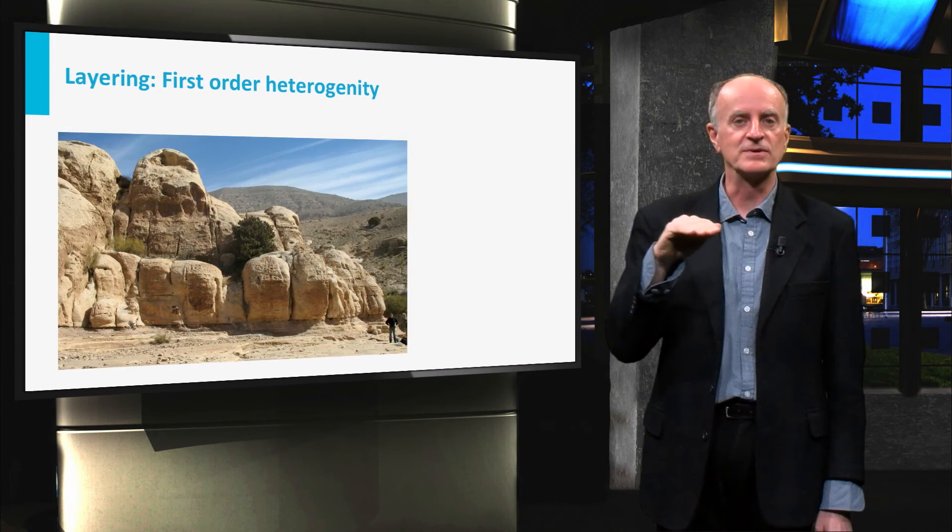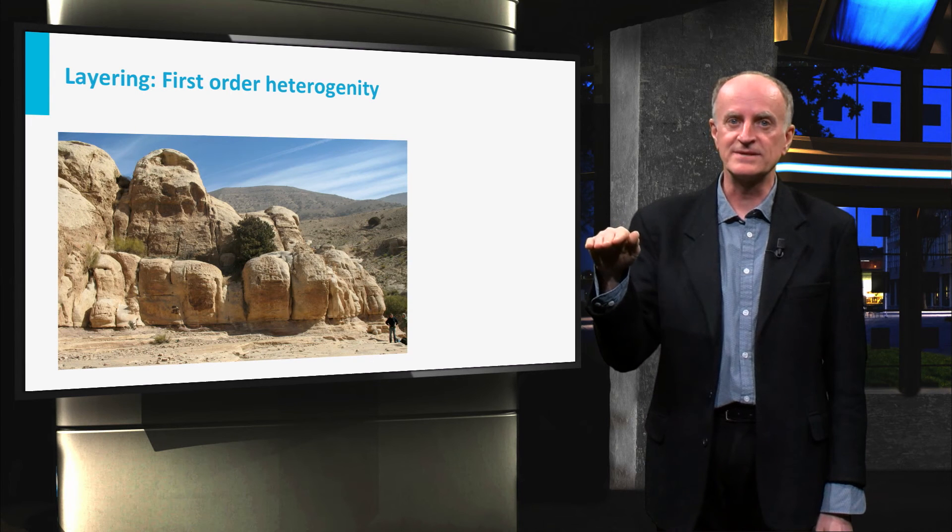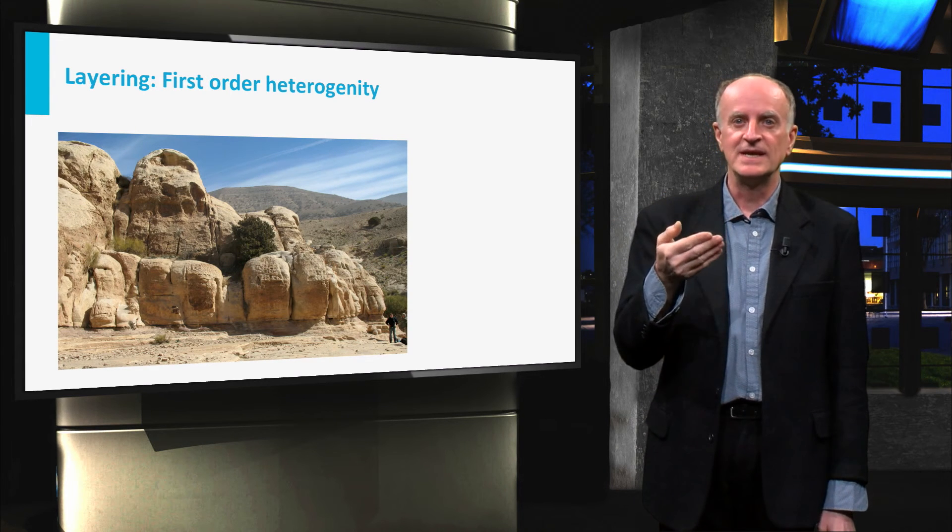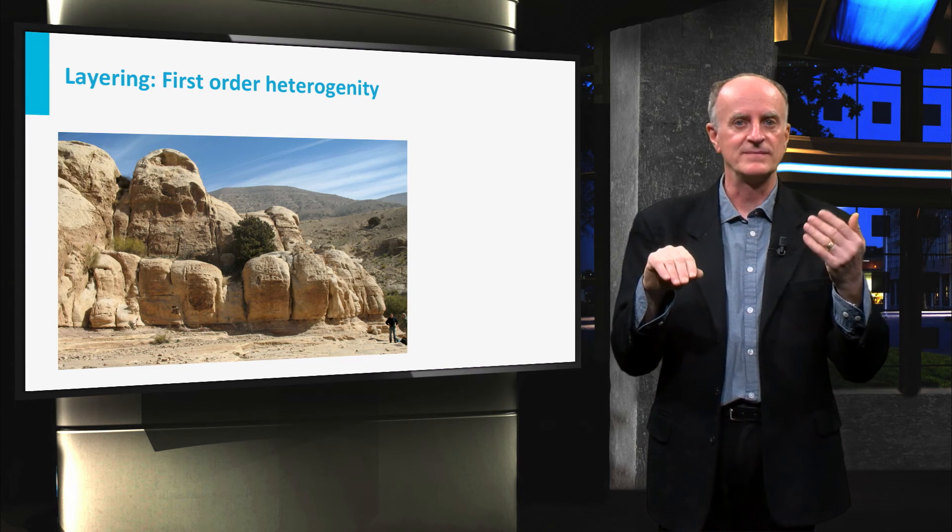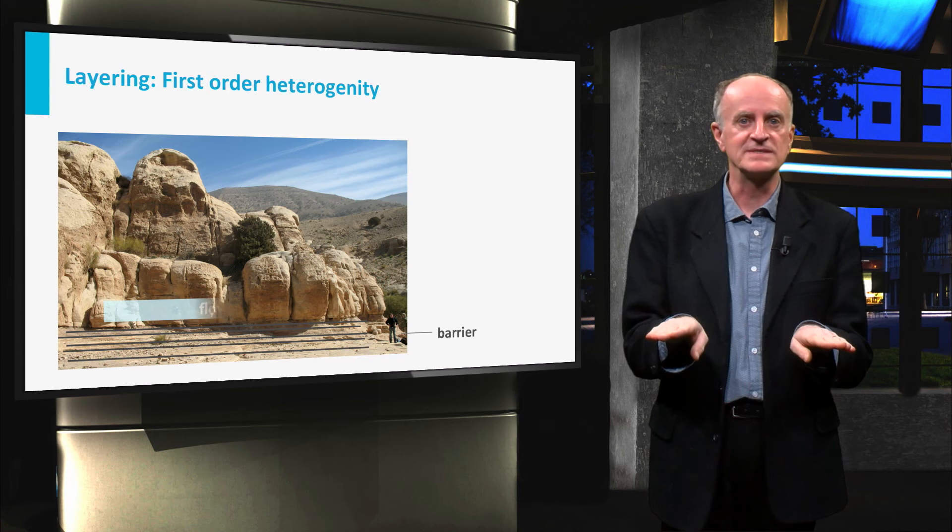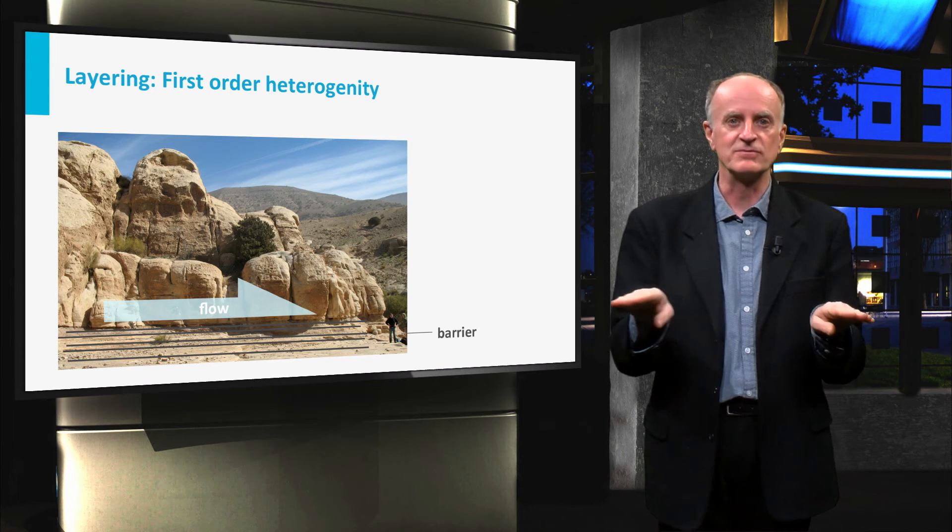Layering is a first-order heterogeneity. Across layers lithologies might change and horizons of shales can separate more permeable rocks. The shales present at the bottom of the outcrop, for instance, are likely barriers to flow.